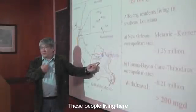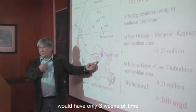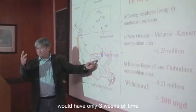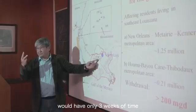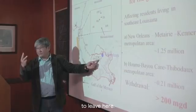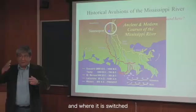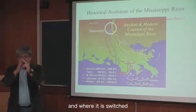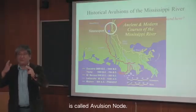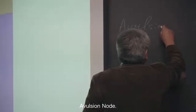These people living here would have only three weeks of time to live here — they have to go. When the river changes its course, we call it avulsion. And where it switches is called an avulsion node.